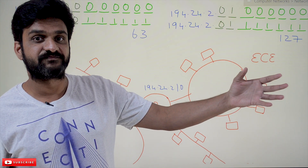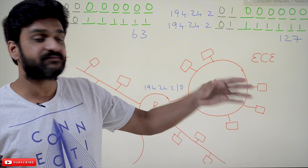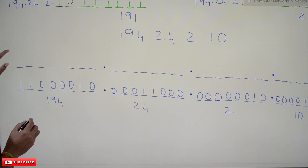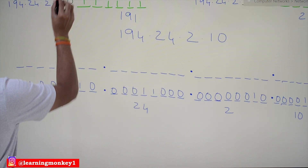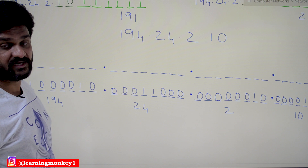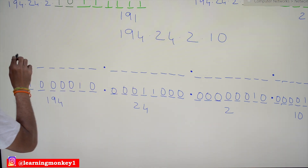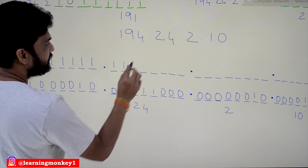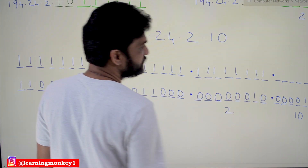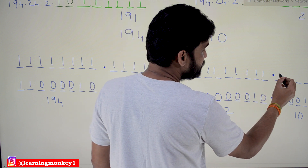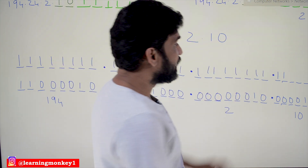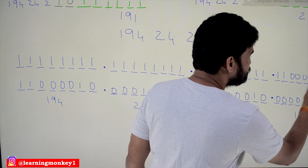We will understand what calculations are made in the router to get the network to which the system is directly connected. For the subnet mask, all ones are assigned to the network part. For a Class C address, the first three octets are the network part — all ones. In the above subnet, two bits are used for subnetting, so those subnet bits are also set to one. The host bits are set to zeros.